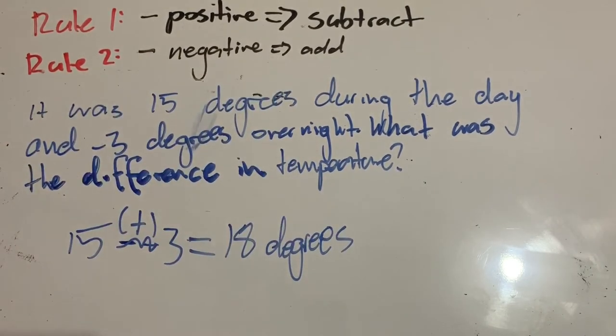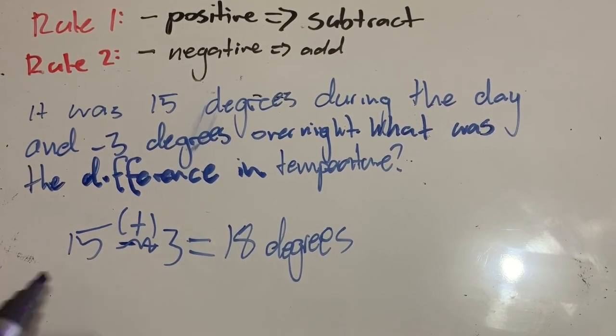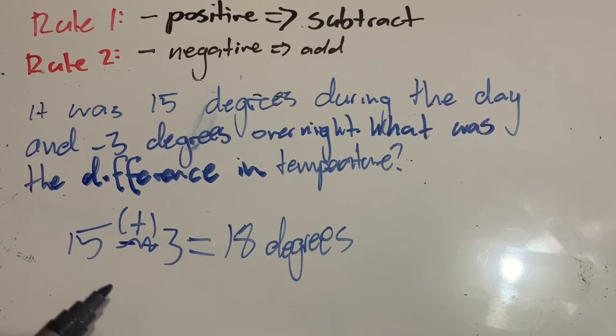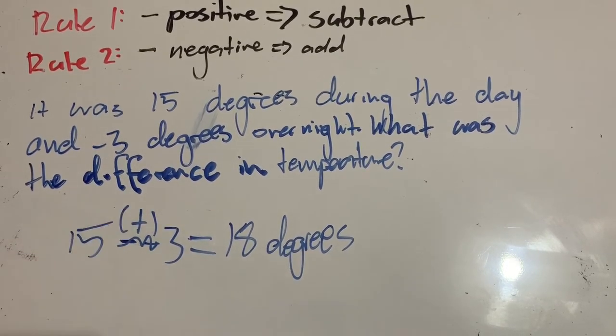Why? That doesn't make a lot of sense, does it? If we're minusing three, we're not minusing three, we're minusing negative three, which is actually adding three. Let me show you on a number line what this actually looks like.